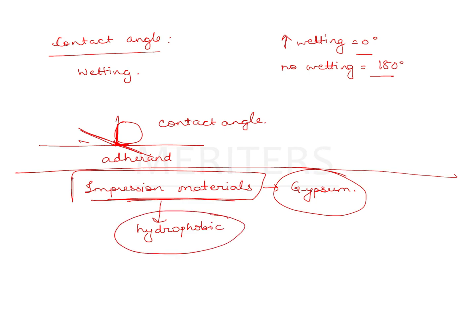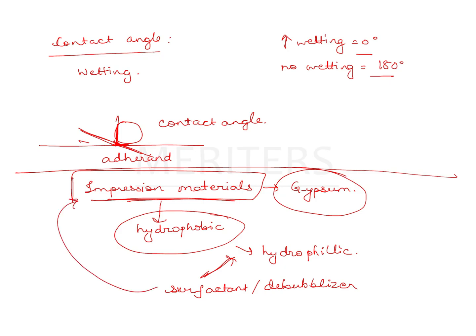To convert hydrophobicity into some degree of hydrophilicity — that means to reduce the contact angle — you can use something called a surfactant or a de-bubbulizer on the impression surface. If you spray this on the impression surface, the wetting is improved between the impression material and the gypsum product. This is a non-ionic surfactant which can be added to the impression material itself or sprayed over the impression material before pouring it with gypsum. This will increase the affinity of that surface for gypsum.